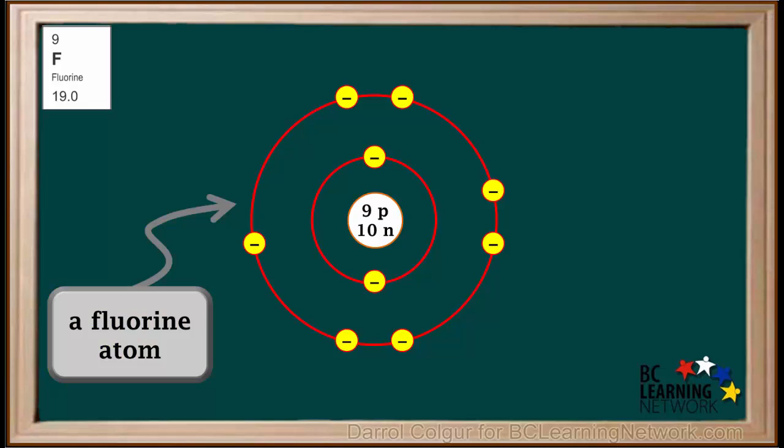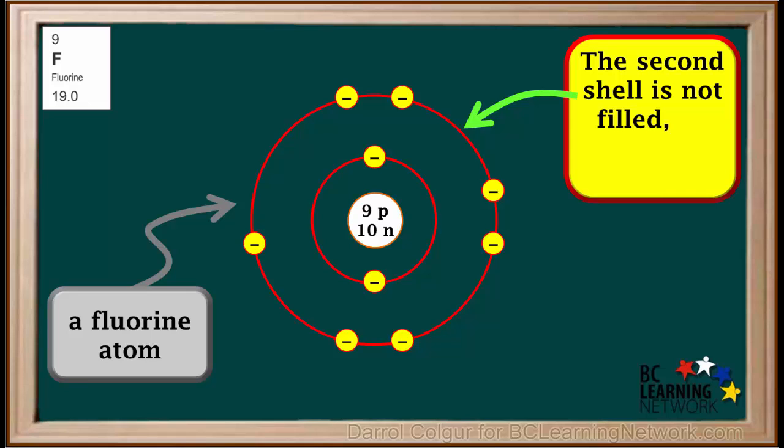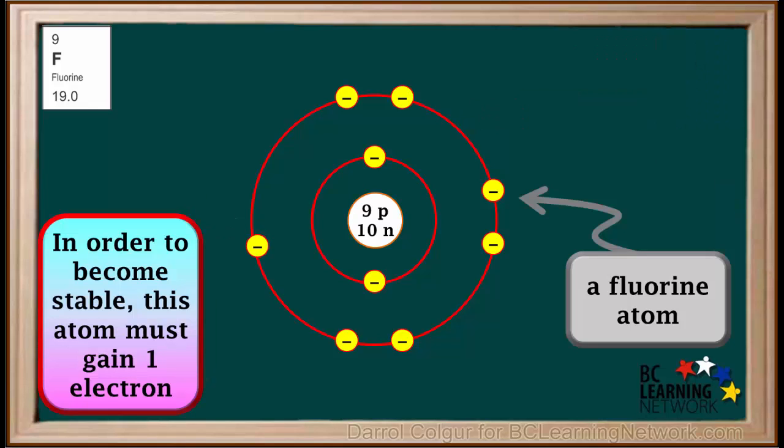We see that in a fluorine atom, the second shell has only 7 electrons, and it can hold 8. So the second shell is not filled. Therefore, this atom is unstable. In order to fill up this second shell and become stable, a fluorine atom must gain 1 electron, right here.